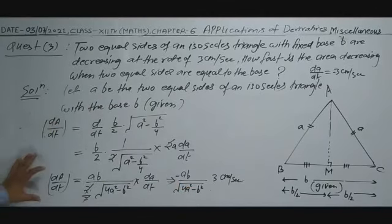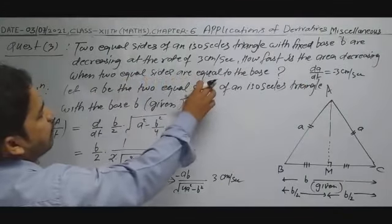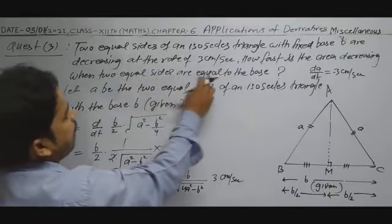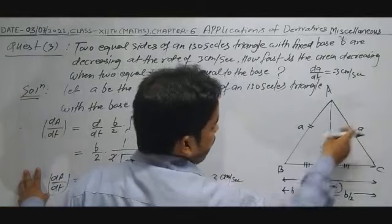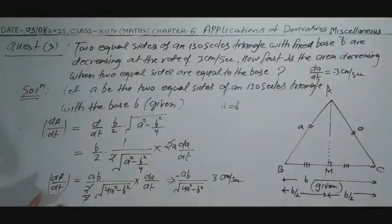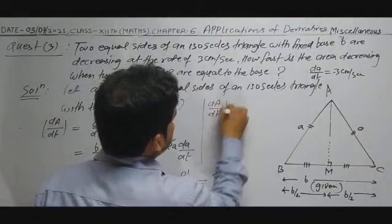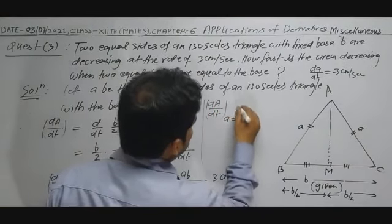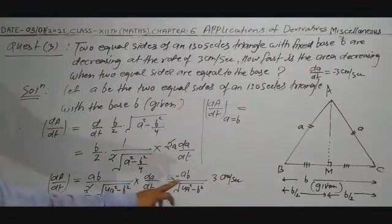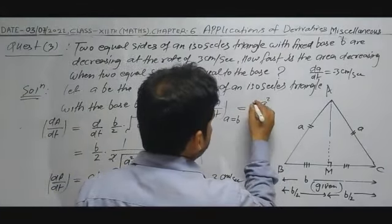We need to find dA/dt when the two equal sides equal the base, i.e., when a = B. For a = B, we calculate the rate of change of area. At a = B: the expression under the root becomes 4a² − B² = 4a² − a² = 3a².